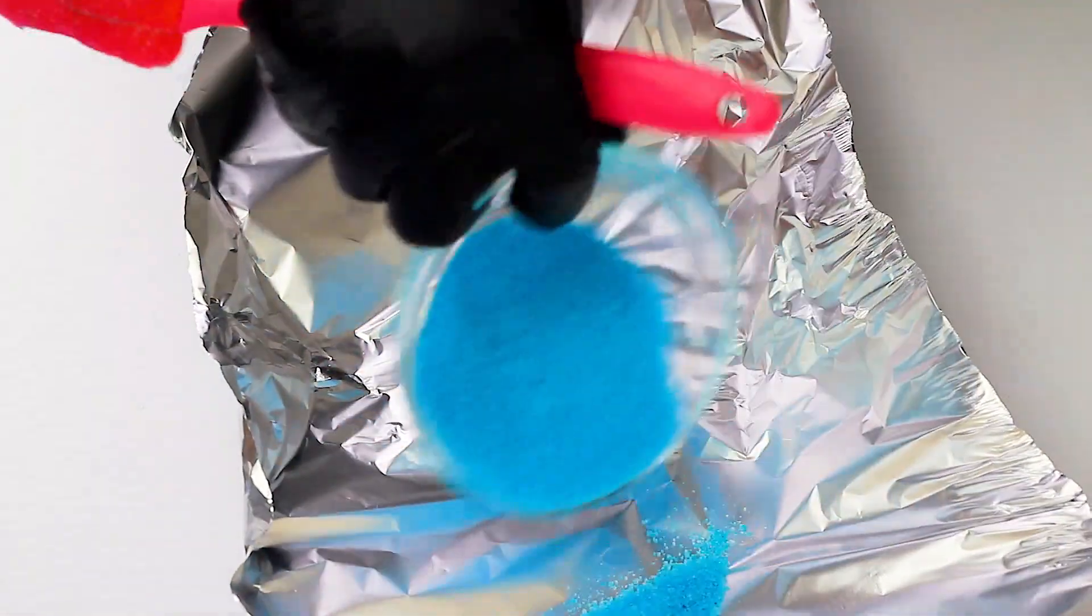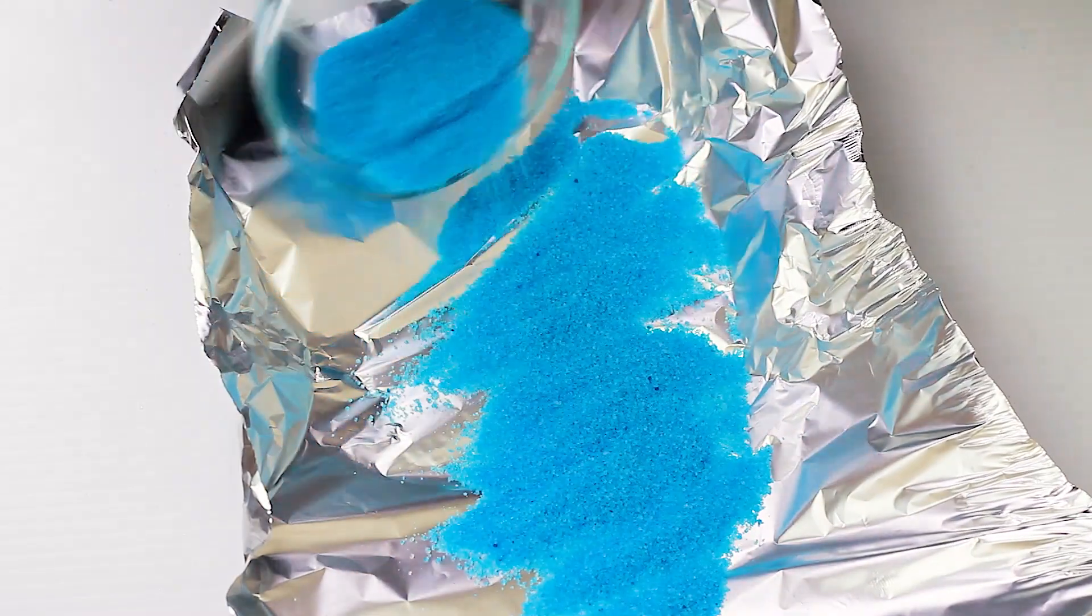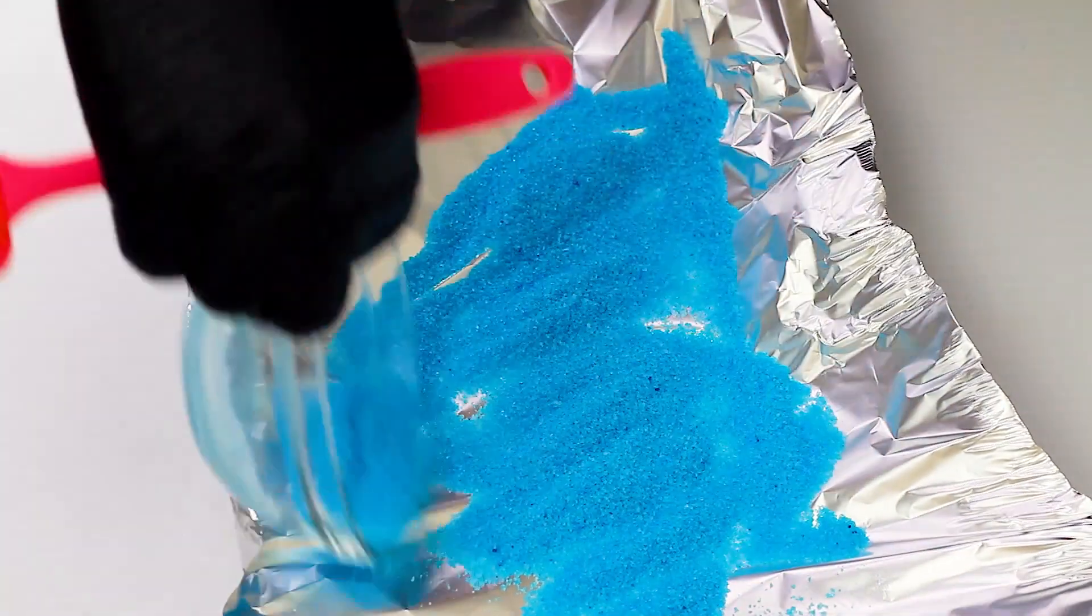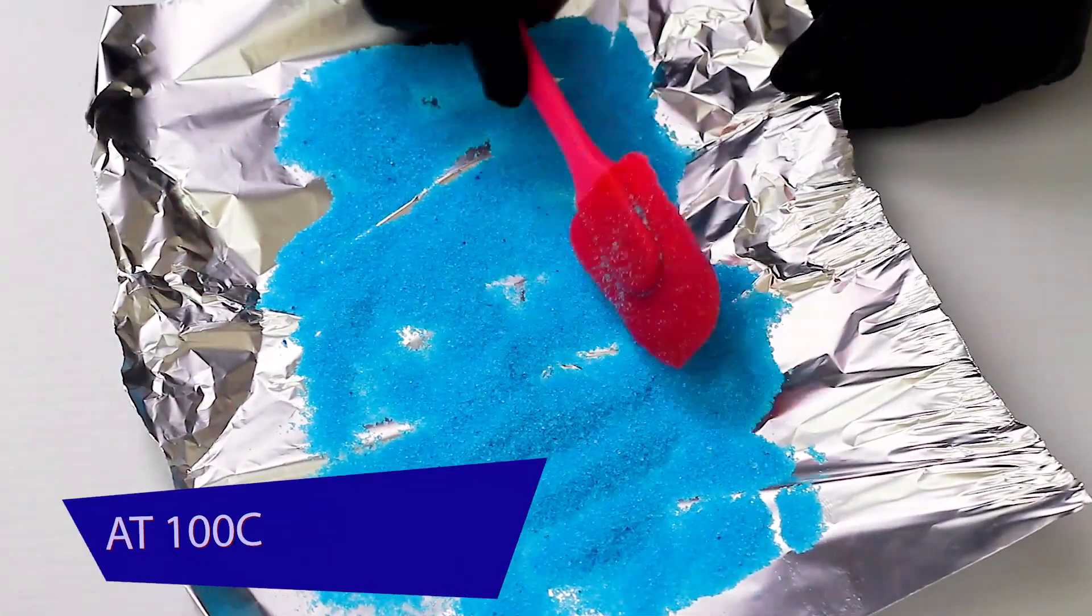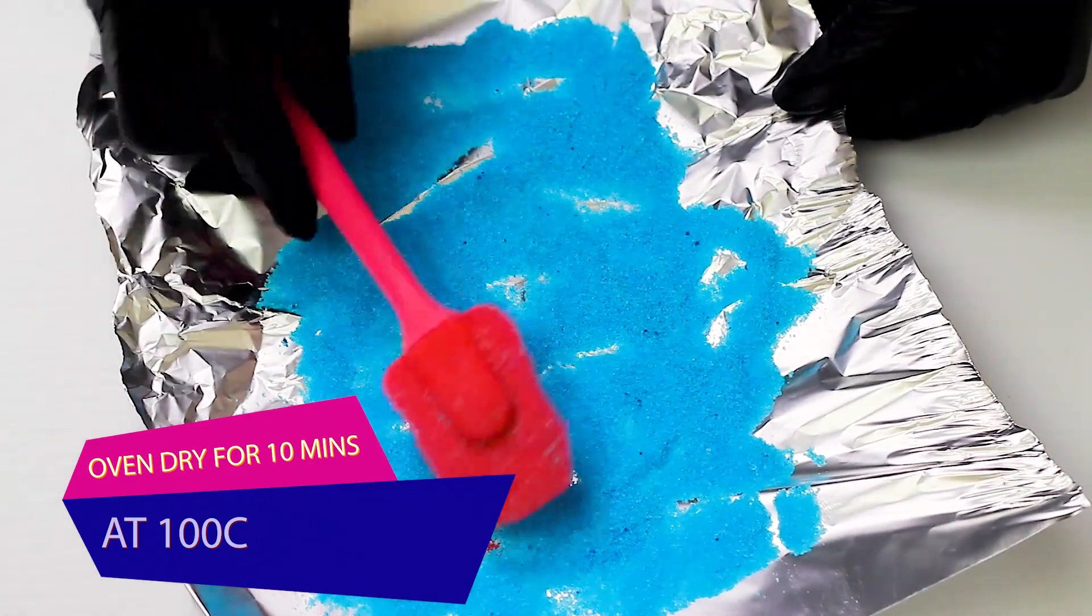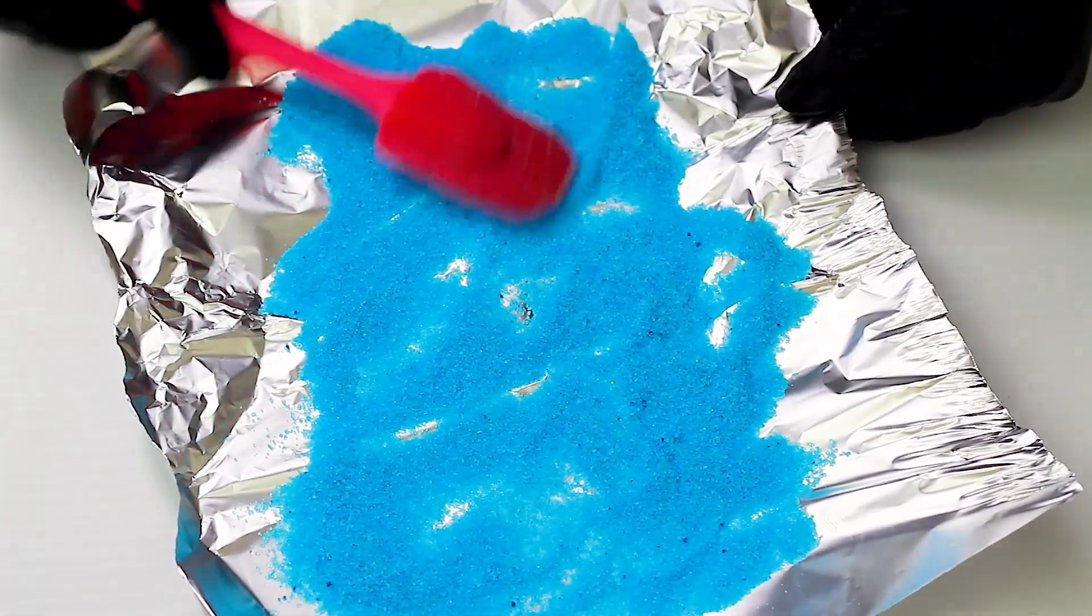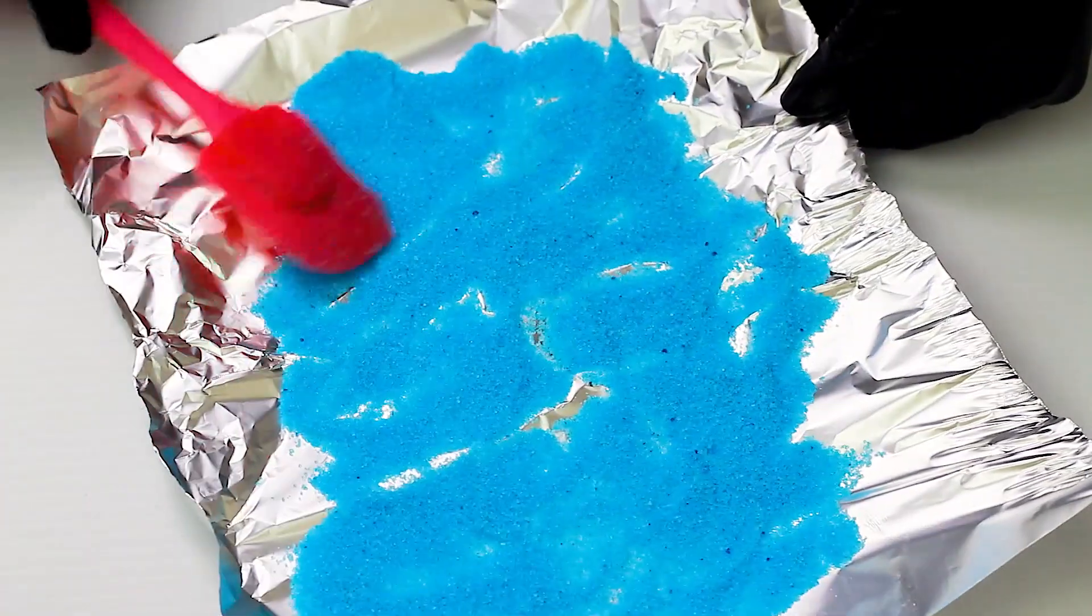Now I'm going to spread it out on foil paper and dry this in the oven. I think I dried it for about 10 minutes at 100 degrees Celsius, between 100 to 150 - I shouldn't even do 150, I feel like 150 was too hot for it.